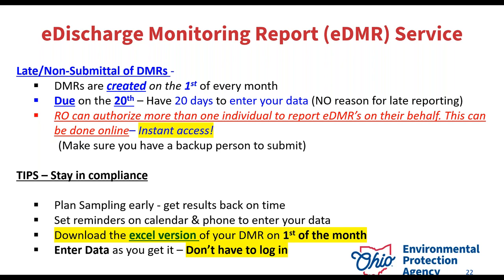The RO can authorize more than one individual to report EDMRs on their behalf — instant access, as long as the RO has an account. Say it's the 19th: the RO can go in about five minutes, give you access, and you have plenty of time to submit so you don't get dinged for a late submittal. Make sure you have a backup person to submit — they might never have to use the account, but if the primary person is out on vacation, sick, or has a family issue, the backup person can have an account ready to go.